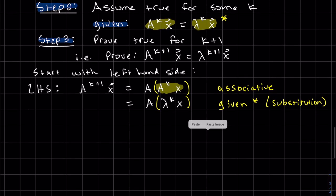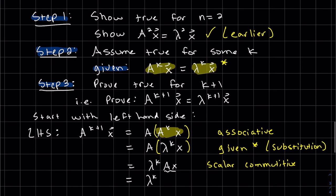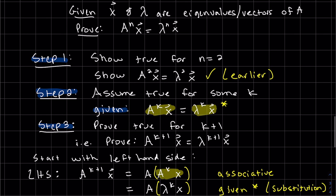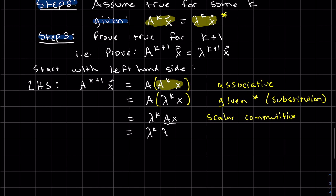So using the given, we're substituting for the given. So again, scalar commutative. What is Ax equal to? That's our other given. Ax is lambda x by definition of eigenvalue eigenvector of A. And the left-hand side becomes the right-hand side. QED. We have demonstrated this, and we're done.